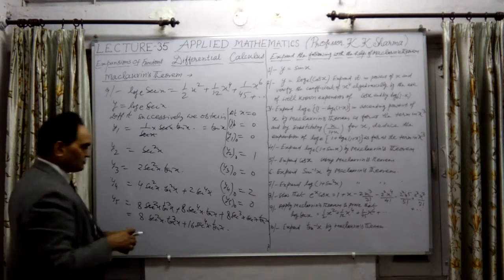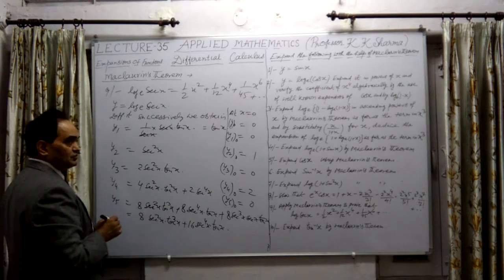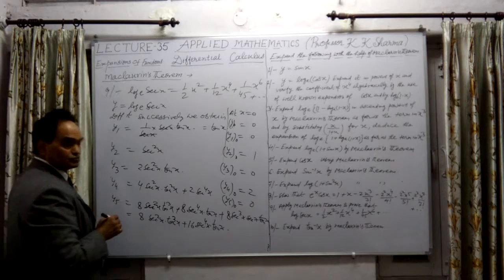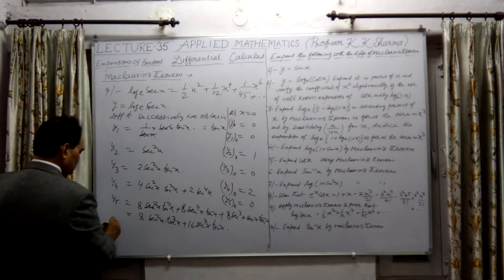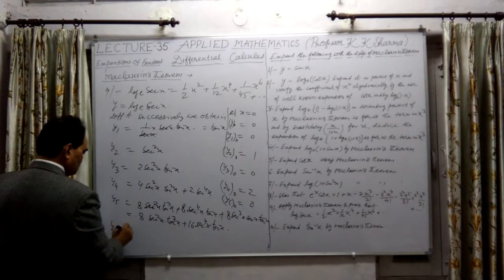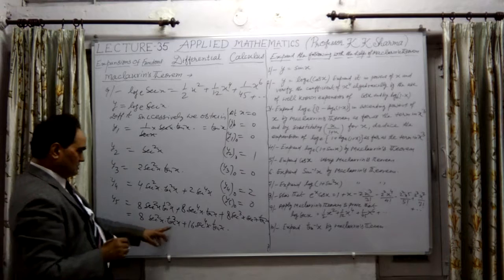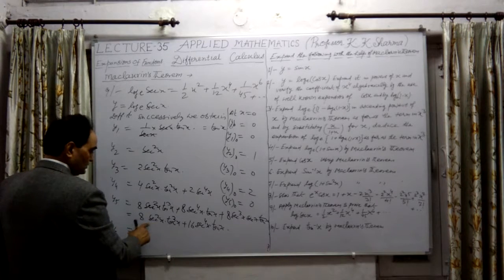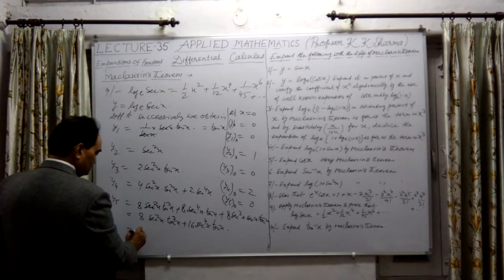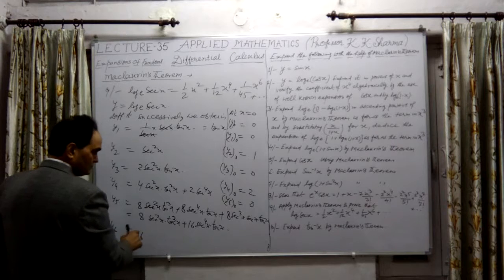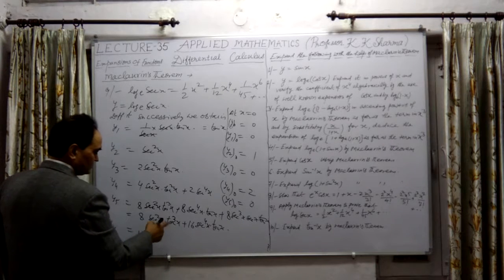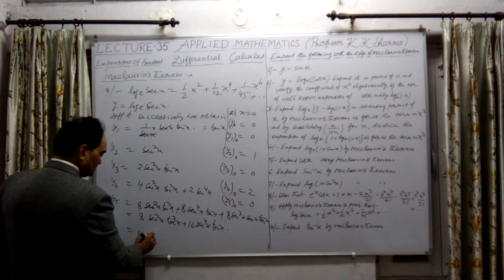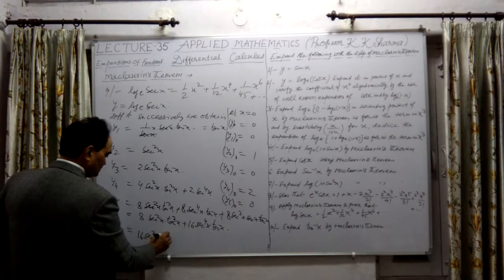Now let me find out whether the 6th term is coming or not. What is y6 - further differentiating this by product rule. The first will be 2 into this, that means 16 into 2nd x - 2nd x is further differentiated, 2nd is 10x, that will be 2nd square x into 10 of 4x.